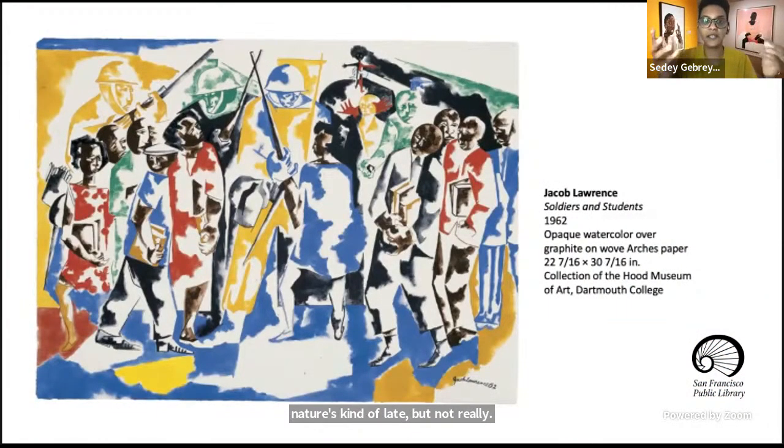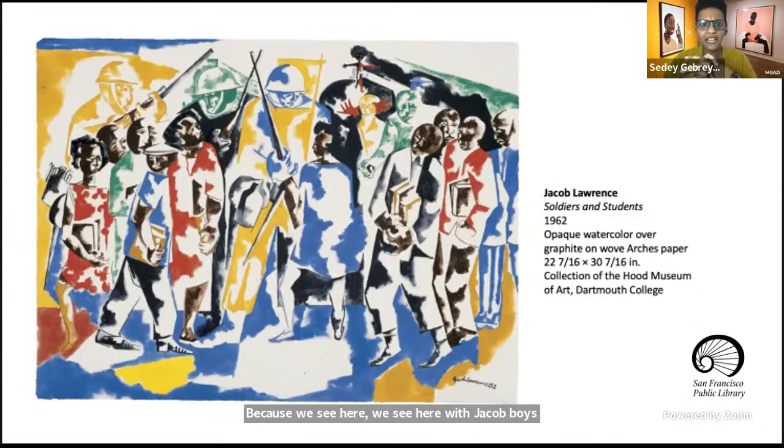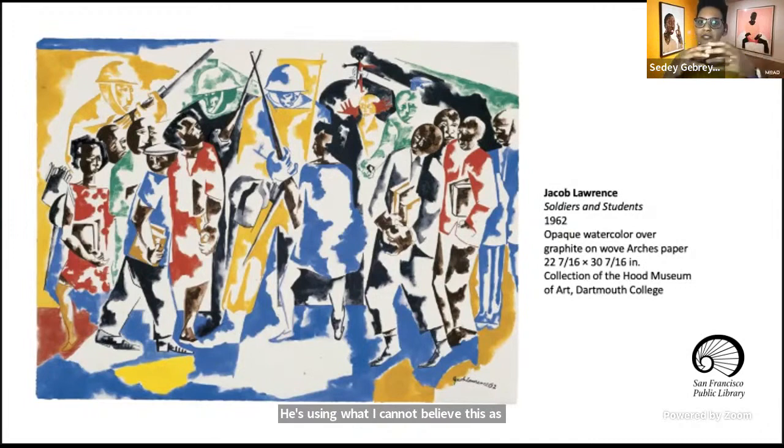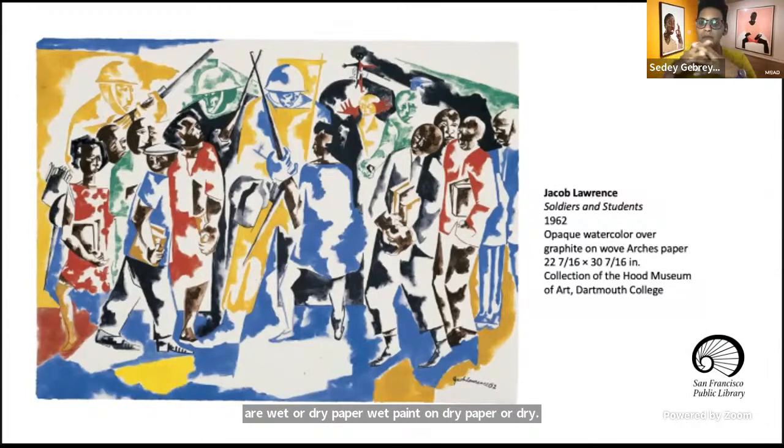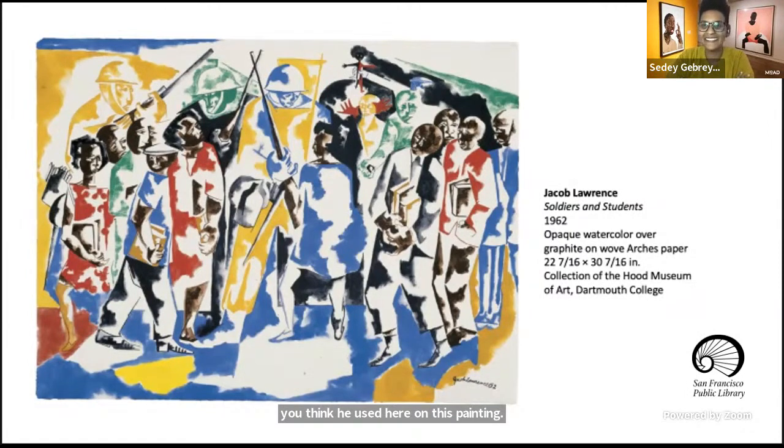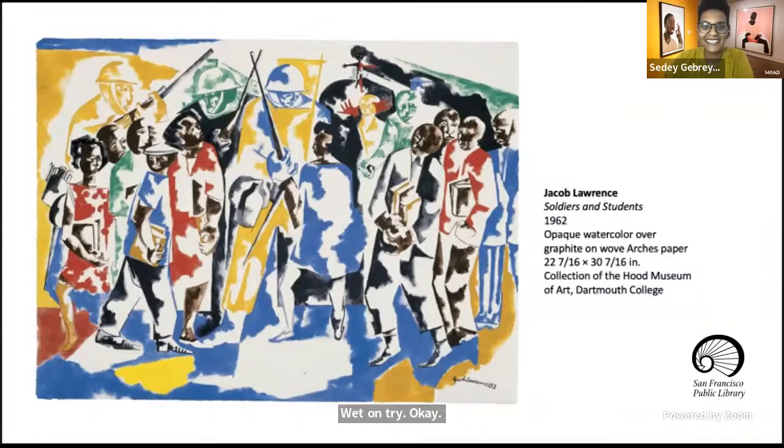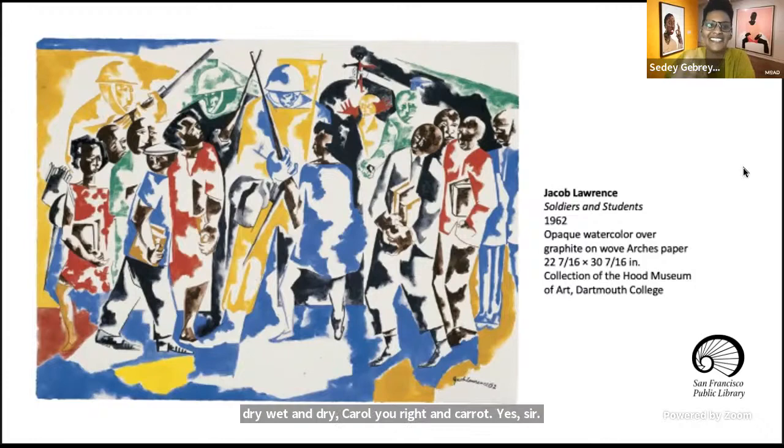Because we see here with Jacob Lawrence's painting, he's using watercolor. I cannot believe this is watercolor, right? And what do you think he used here? Now, the options are wet on dry paper, wet paint on dry paper, or wet paint on wet paper. Which one do you think he used here on this painting? There are no wrong answers. I see in the chat. Wet on dry, okay. And what made you say that? I'm curious. Wet on dry. Carol, you're right. And Kara, Sarah, is it Kara? Carol. It's precise. Yeah, it's precise.